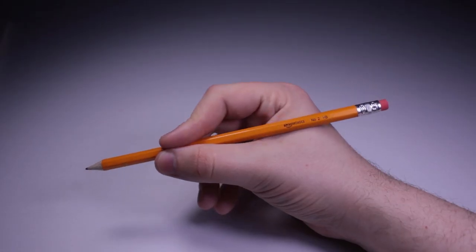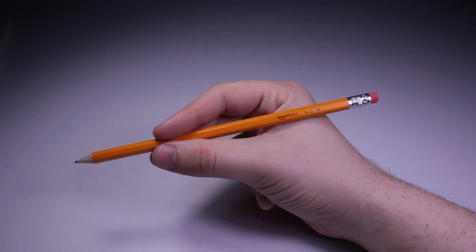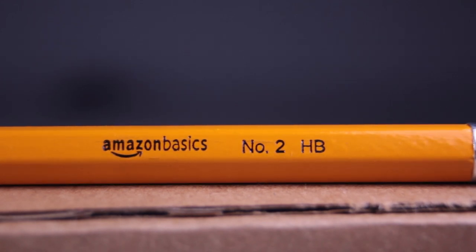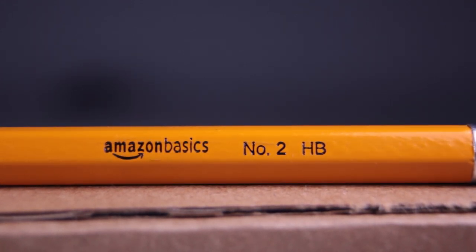So, it's a pretty typical yellow office pencil, unassuming and pedestrian. The imprint is black on smooth and even lacquer and successfully hedges its bets by calling it both a number two and an HB pencil, ensuring comprehension on both sides of the Atlantic.